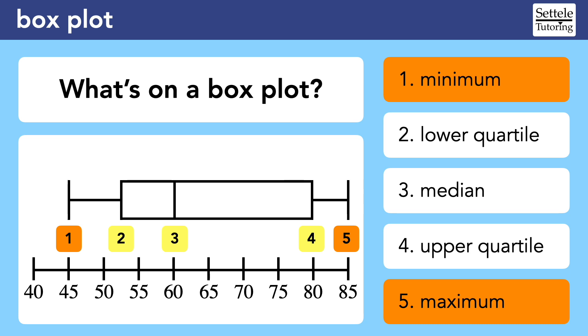The minimum and maximum values are easy to spot. They are shown by the ends of the lines coming off the box, which are sometimes called the whiskers. In fact, box plots are often called box and whisker plots, but not really on the SAT. In this case, the minimum value is 45 and the maximum value is 85.